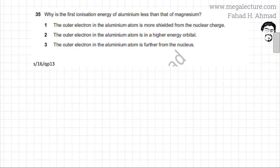Coming back to the question, I'm going to answer each statement. The first one is that the outer electron in aluminum atom is more shielded from the nuclear charge, which is correct. It is more shielded - you have more subshells coming in between. The next one is that the outer electron in the aluminum atom is in a higher energy orbital, which is also correct. And the next one is that the outer electron in the aluminum atom is further from the nucleus, which is also correct. All three statements are correct, which would be option A according to the marking key.